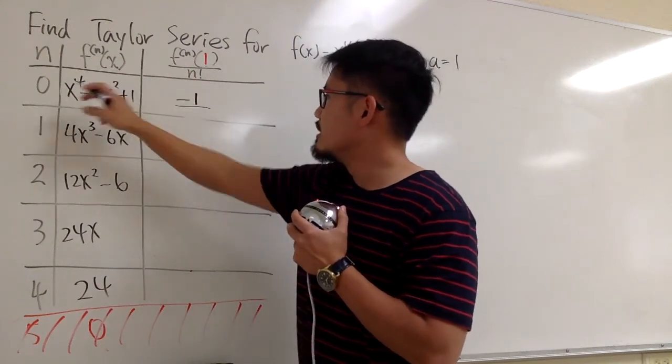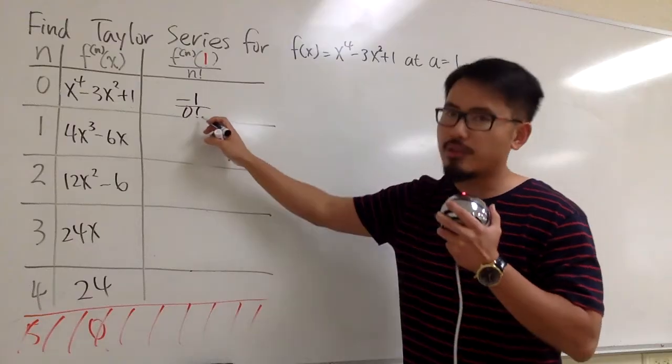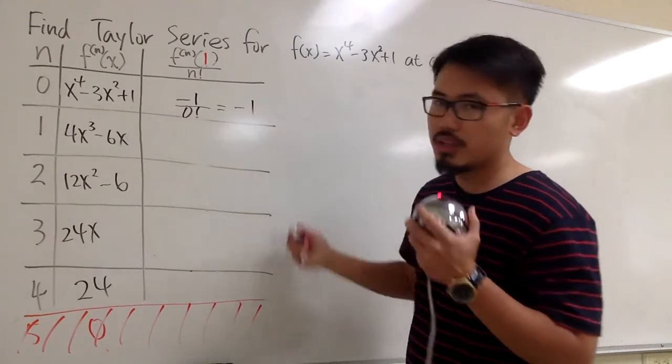And then we divide it by 0 factorial. By definition, 0 factorial is 1. So this is going to be negative 1 altogether.